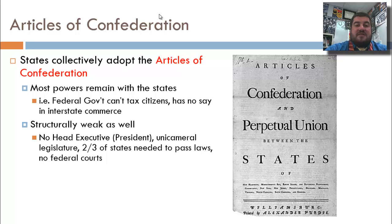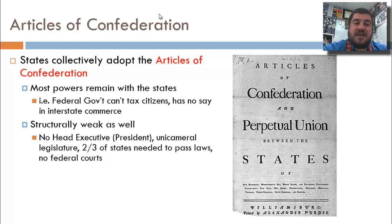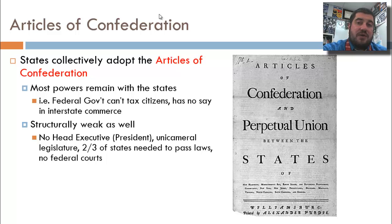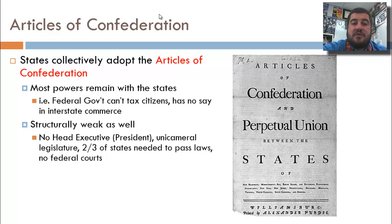The Articles of Confederation is our first constitution. The point of the Articles of Confederation is that we don't want to give a lot of power to a national government. We just fought a seven-to-eight-year revolution to get out from under a powerful king, a tyrant — so why would we give power to another one? A confederation is a group of states that give a little bit of power to the national government, but most power remains with the states.